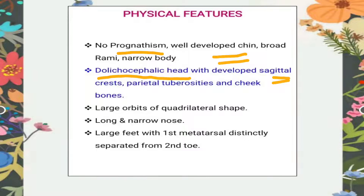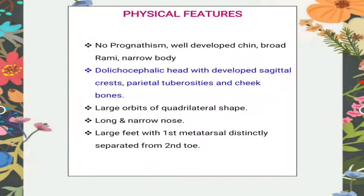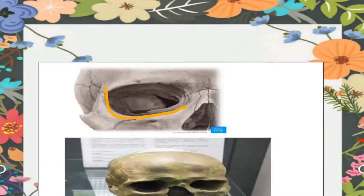They have well-developed parietal tuberosities, which is a convex smooth eminence on the external surface of the parietal bone of the skull. They have very prominent cheekbones. Talking about the orbits, they have quadrilateral-shaped orbits.